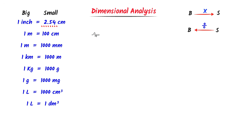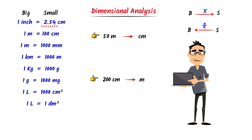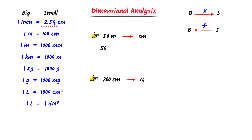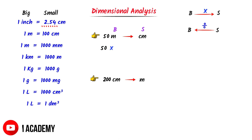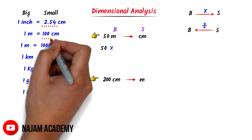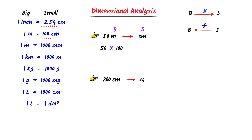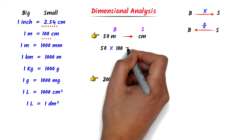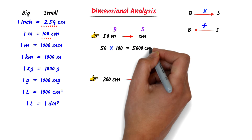Now, consider this question: convert 50 meters to centimeters and 200 centimeters to meters. Pause the video and try to solve them. Well, meter is a bigger unit and centimeter is a smaller unit. So I multiply by the conversion factor, which is 100. After calculation, I get 5000 centimeters.